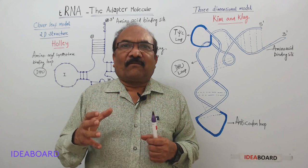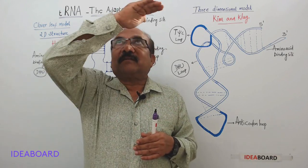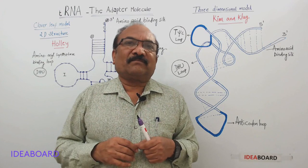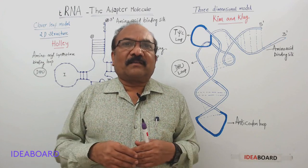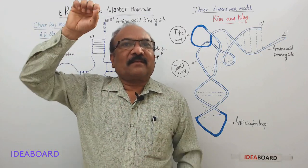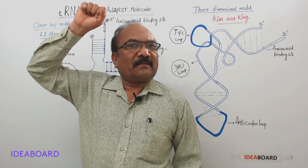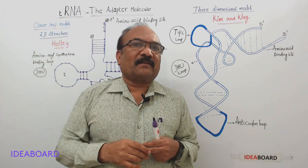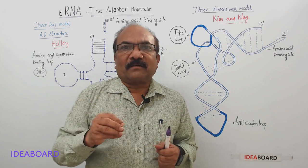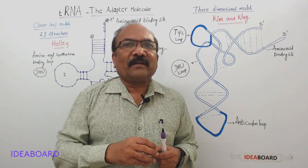It is called adapter RNA because it is the intermediate molecule between the mRNA and the amino acid or polypeptide chain. With one hand it holds the codon of mRNA and with the other hand it holds the amino acid. It is called soluble RNA because it dissolves in a one molar NaCl (sodium chloride) solution.